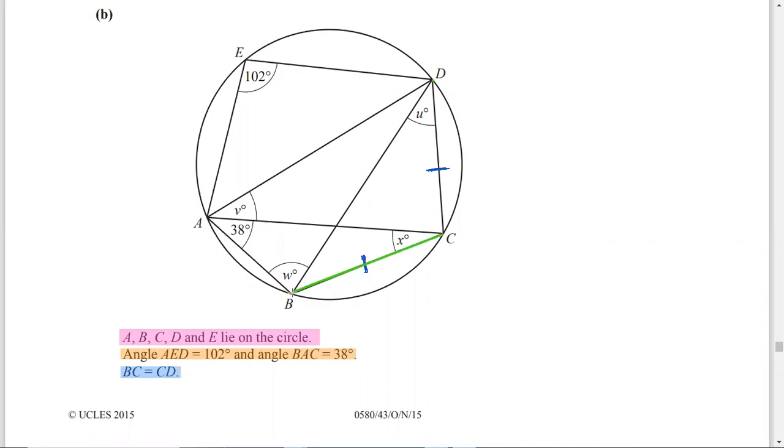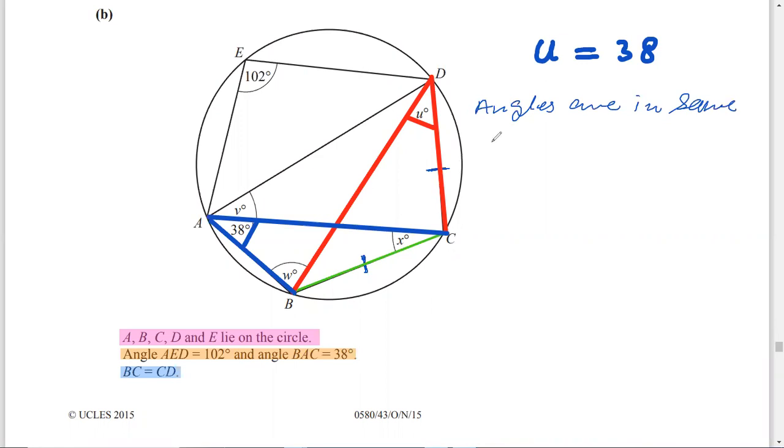If BC is a chord, BC angle is 38. We have a property: angles in same segments are equal. In this way, U is equal to 38. Reason: angles are in same segment are equal.